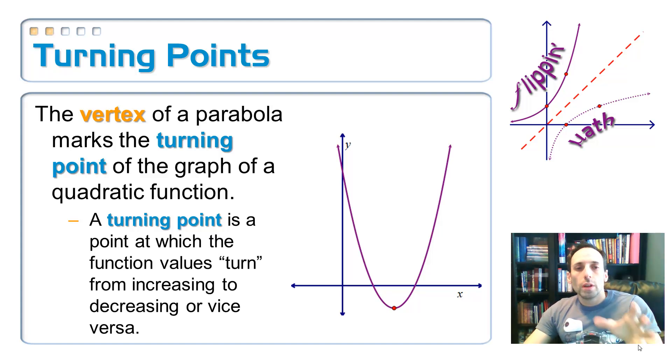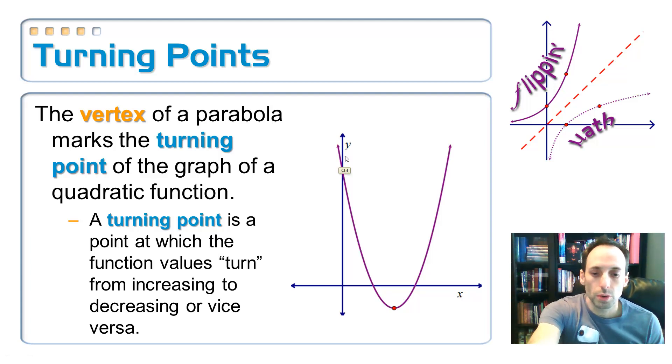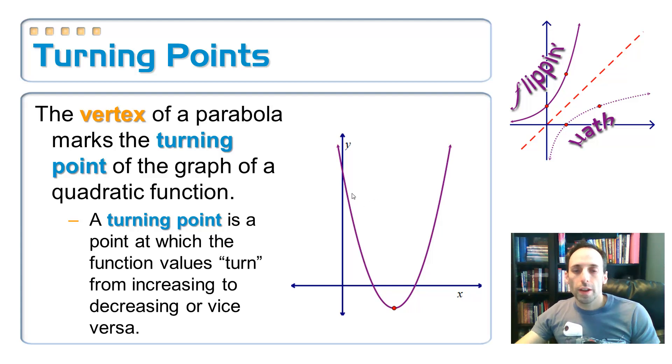So just some review based on the quadratics, based on parabolas, and then we're going to apply this to polynomial functions of degree higher than 2. The vertex of a parabola marks the turning point, the highest point or the lowest point on your graph. A turning point on a graph means you are turning from either increasing to decreasing or decreasing to increasing. So if I move from left to right, the values on the graph are going down, decreasing. And then at the vertex, it just turns a corner and starts increasing again. That's what we mean by a turning point.